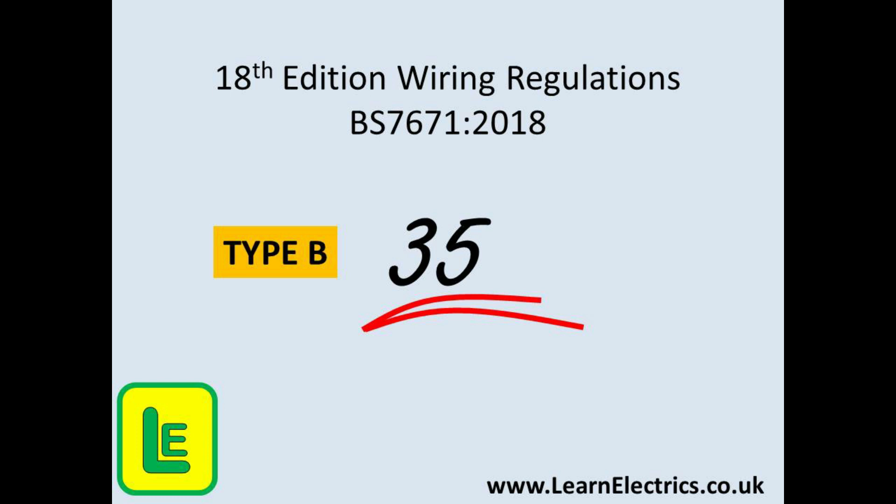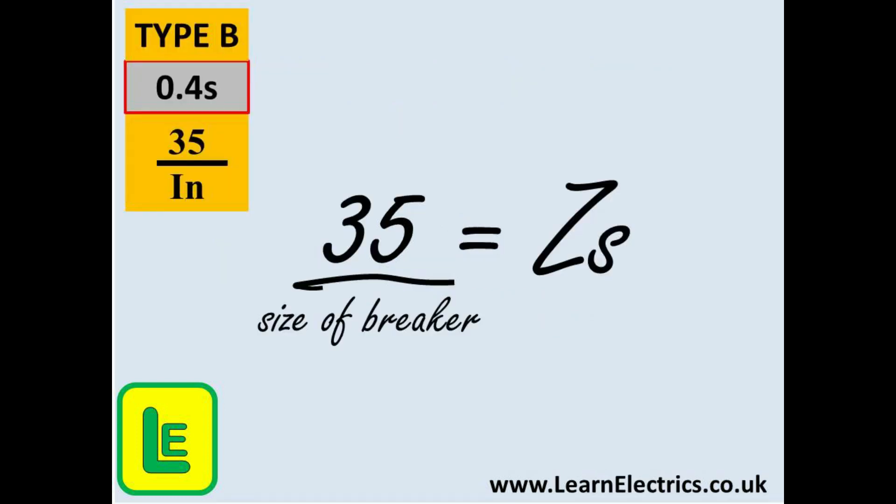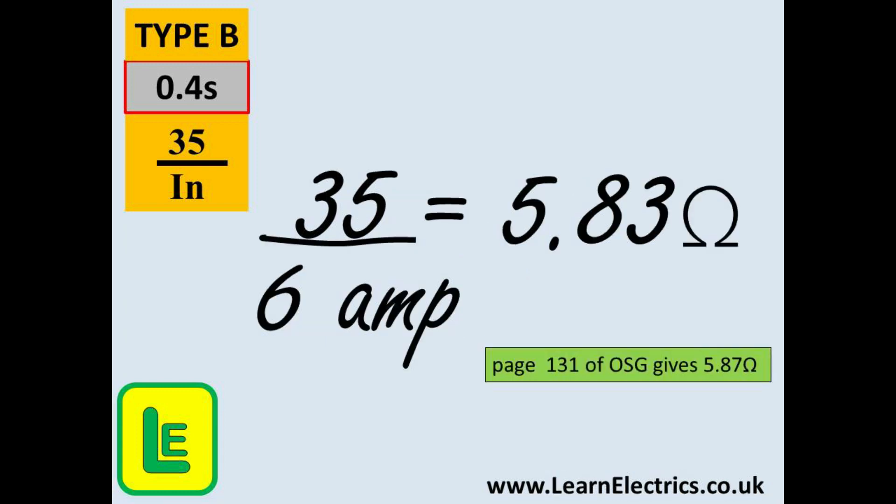First, we need the number 35. Then we divide the 35 by the size or rating of the circuit breaker and this will give us the maximum measured ZS value. At the top left of this slide I have repeated this information. We have a 0.4 second disconnection time. It is a type B breaker and so the calculation is as shown: 35 divided by IN where IN is the size or rating of the breaker.